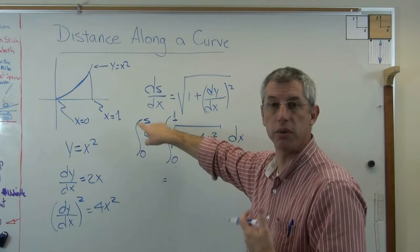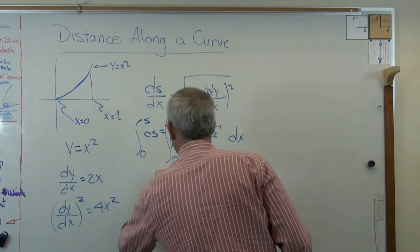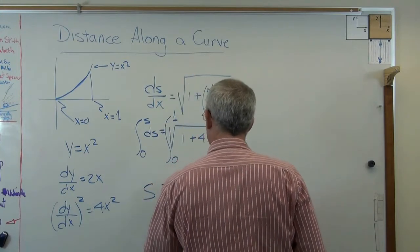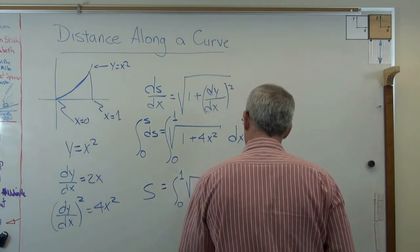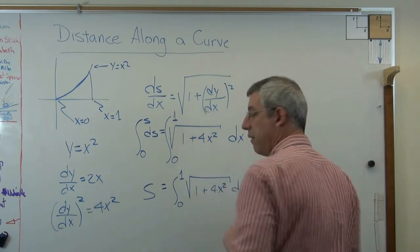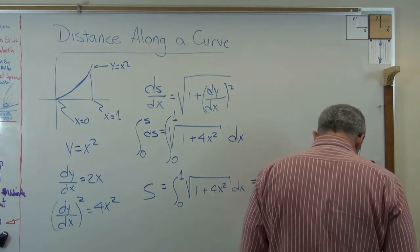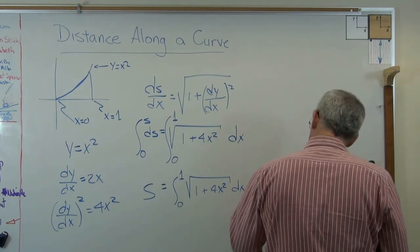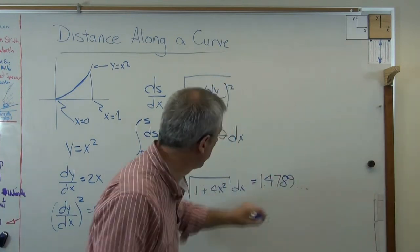Well, when you integrate, that turns out to be s. And now I have over here, just to write this out one more time, 1 plus 4x squared dx. Now, you can do this by hand if you want. I cheated a little bit and ran it through Mathematica. And I got, let's see, 1.4789. That went out for a while. Okay? So that's the length to go from x equals 0 to x equals 1.